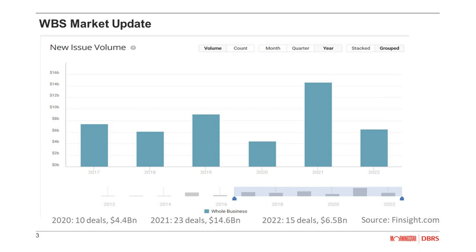Initial securitizers in the asset class have been franchised restaurant brands, but eventually this led to many non-restaurant companies — such as fitness and wellness concepts, music rights licensing, and home services providers — entering the asset class. They share similar characteristics such as diversified operators and locations, contractual cash flows, as well as brand strength and scale, which are key for long-term cash flow generation.